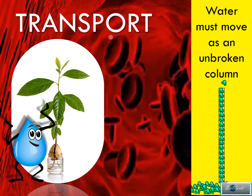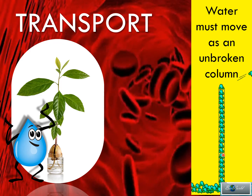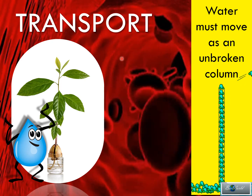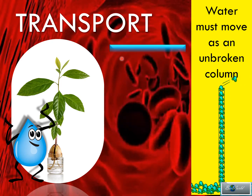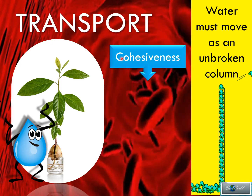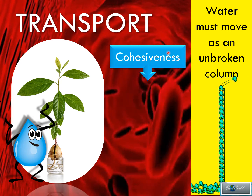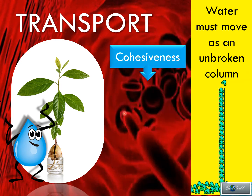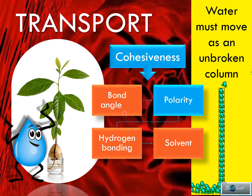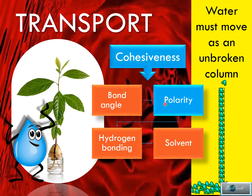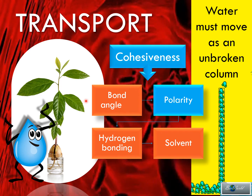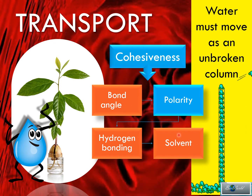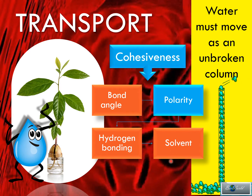In transport, one golden rule is that water must move as an unbroken column. So to make sure water is continuous, cohesiveness is the important property. Cohesiveness is a physical property, and if you understand our earlier discussion, cohesiveness comes from hydrogen bonding, hydrogen bonding comes from polarity, and polarity comes from bond angle. Of course, if water is going to transport molecules, water must have used the chemical property of solvent to dissolve the molecules first.